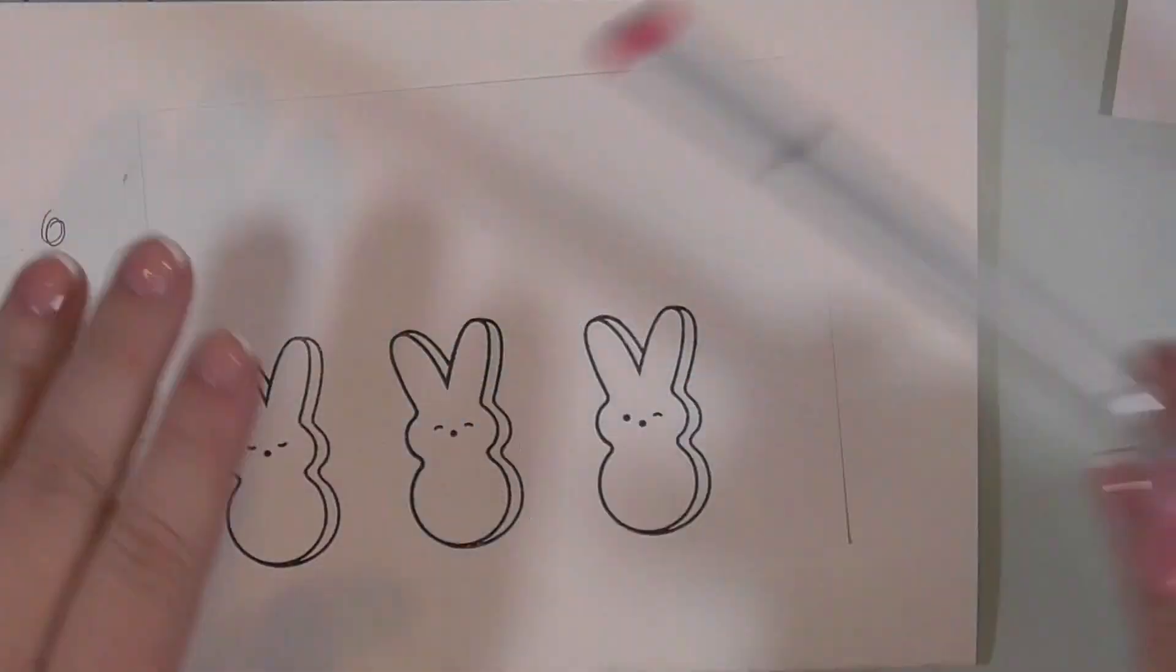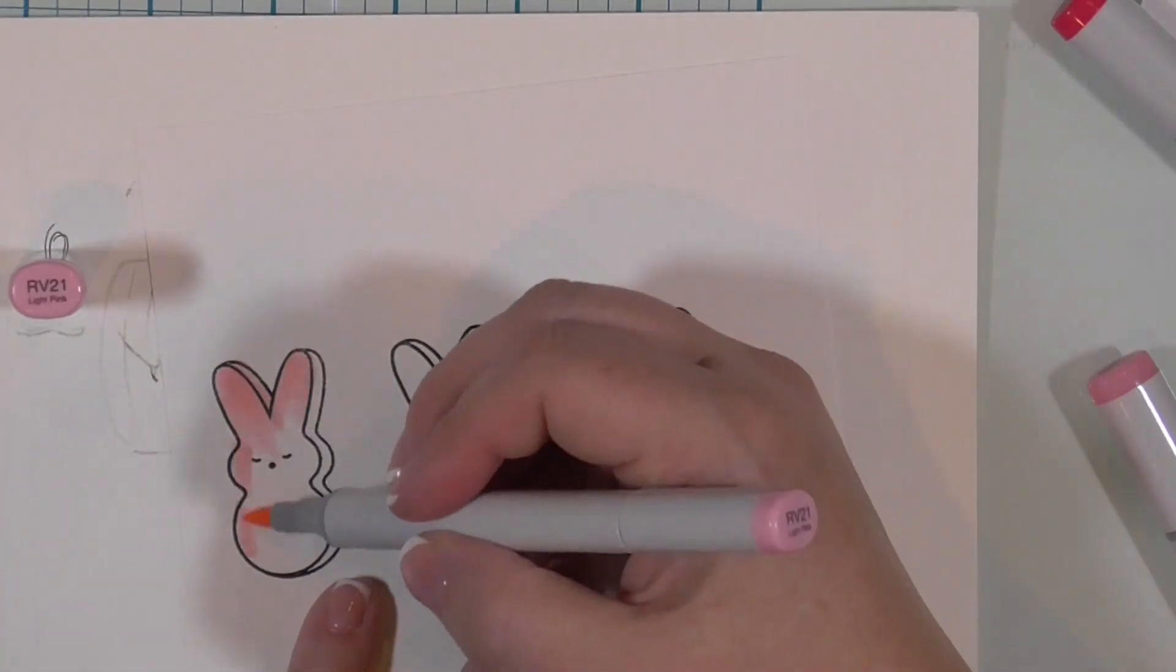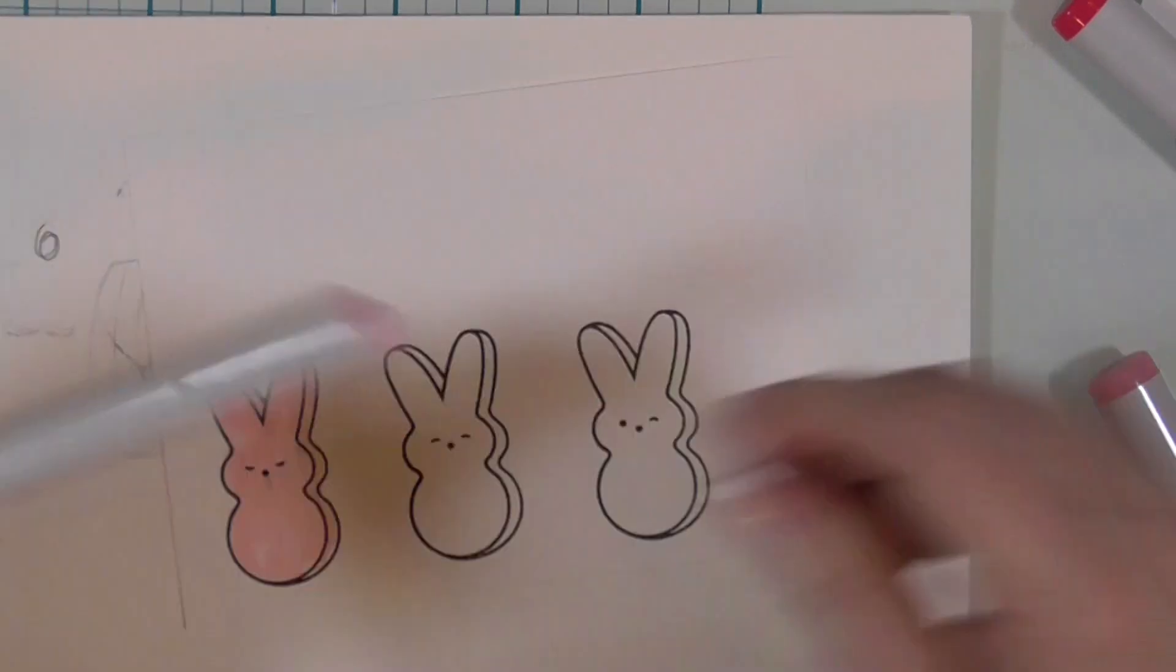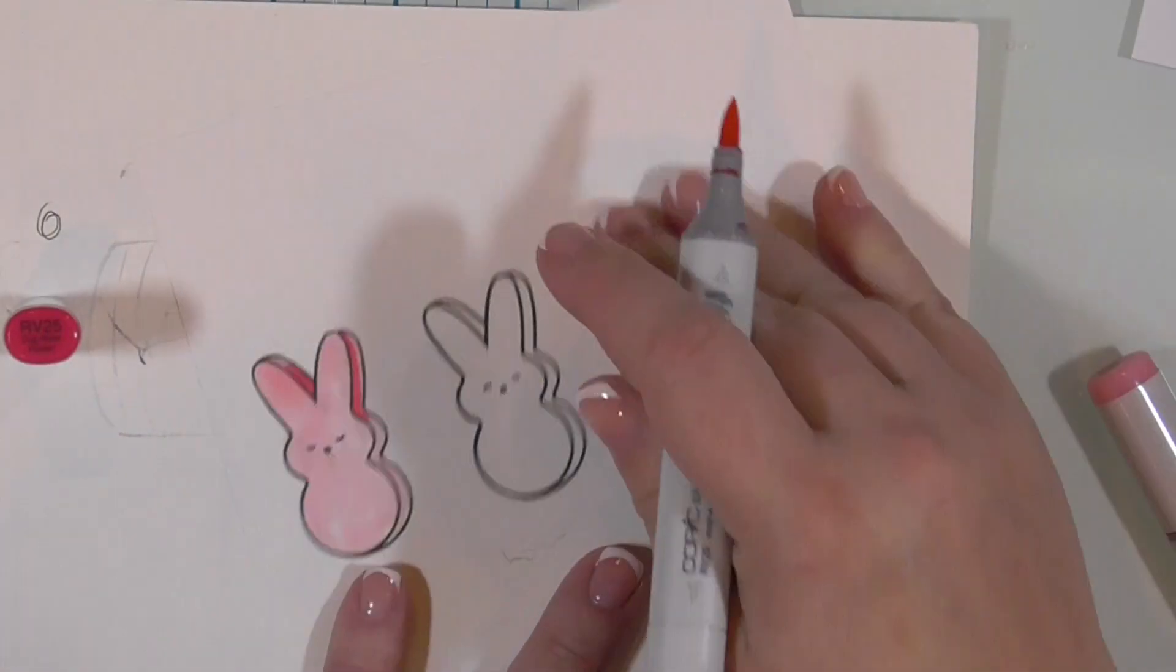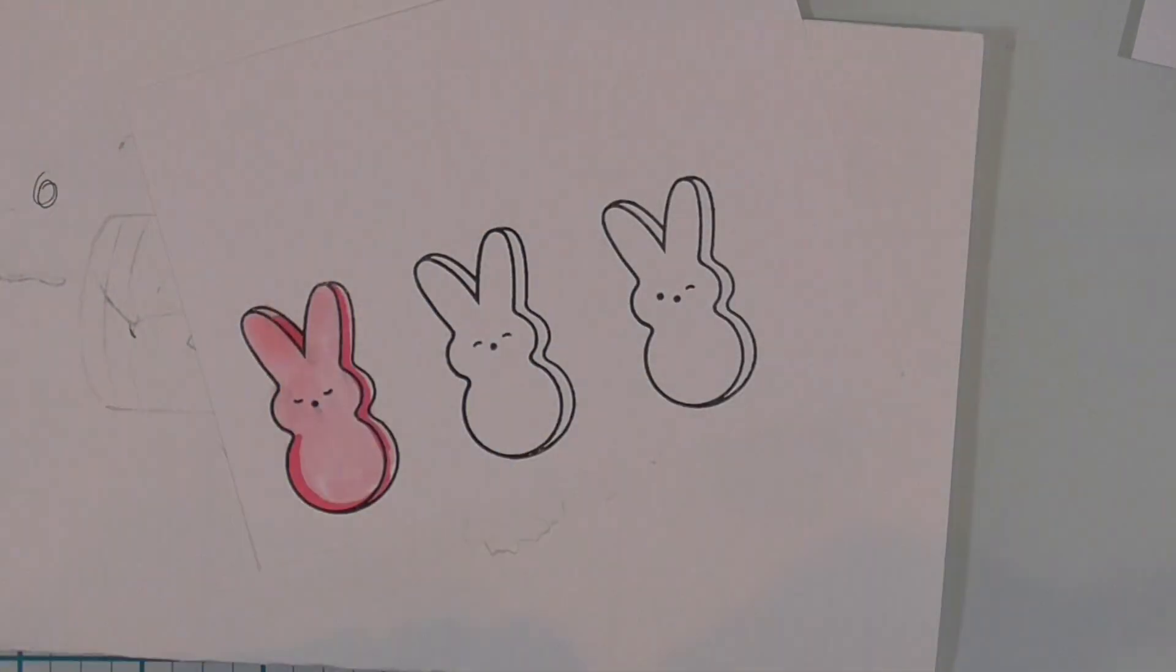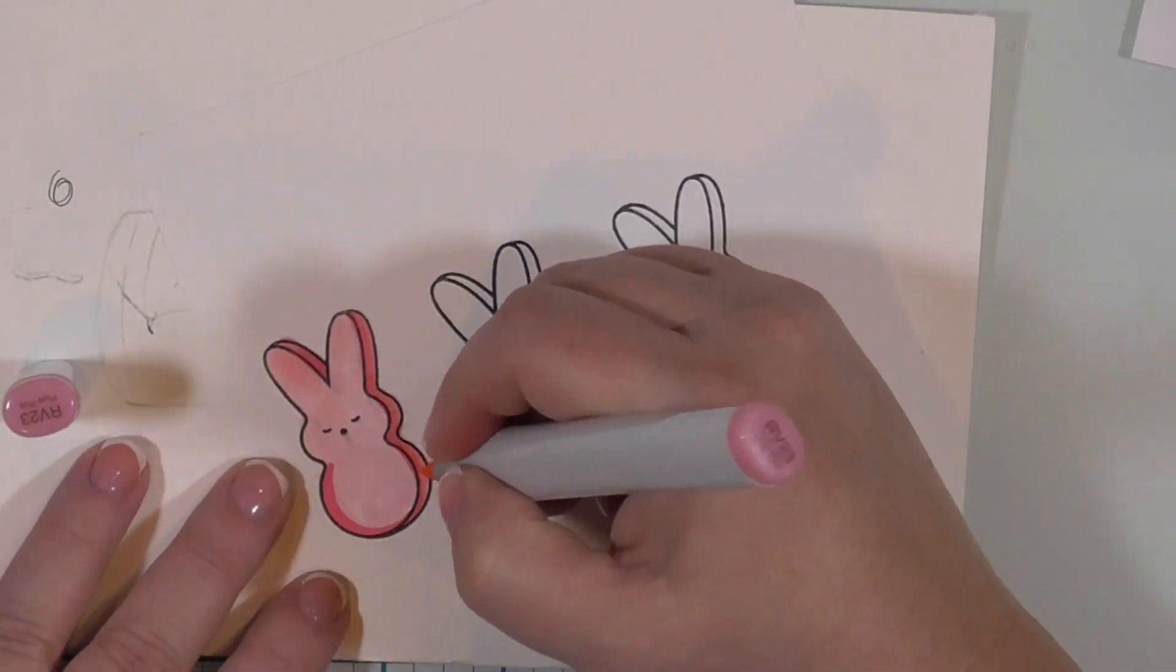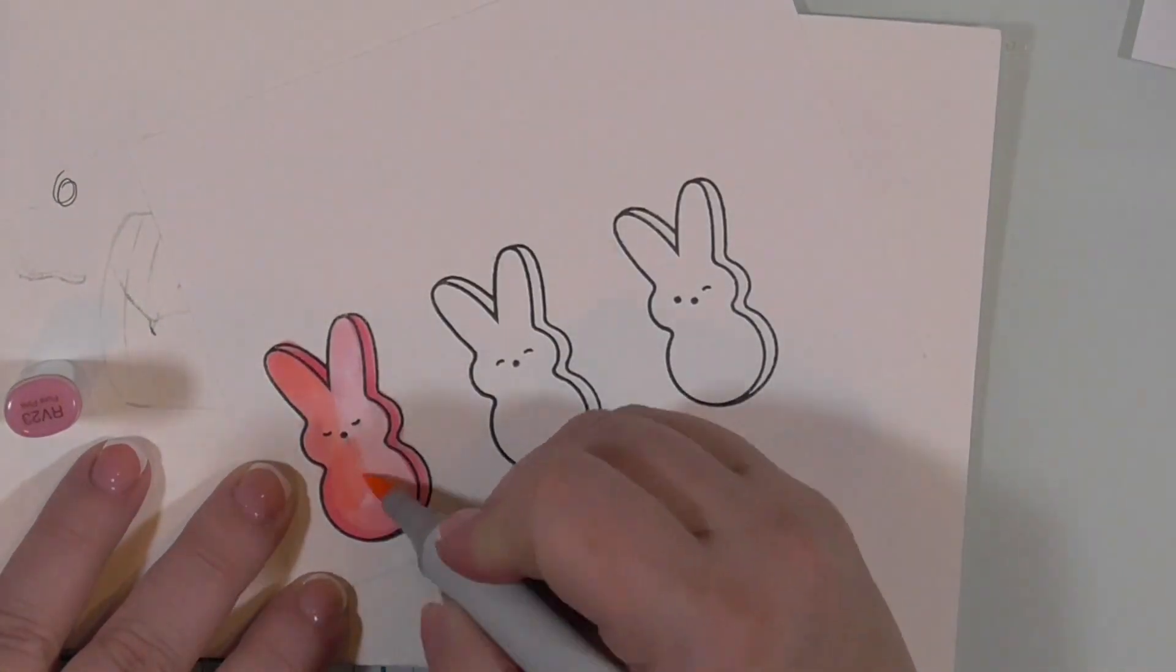Anyways, now on to the coloring. And I have super fast sped this up. I will put the color combinations down in the description box below. Also, for the pinks, because reds are hard to blend, I did color the entire bunny in my lightest color. And then I went with my darkest, my mid-tone, and my lightest. And I still had to go back and forth a few times to get those to blend really nicely.